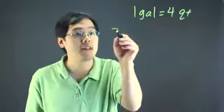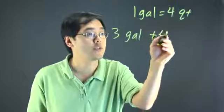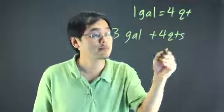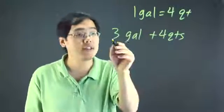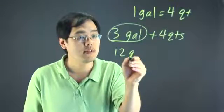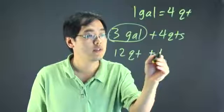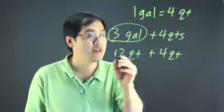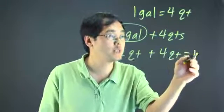So let's just say if you're adding three gallons and four quarts together, what you have to do is take the number of gallons, multiply it by four to convert it to quarts, and then 12 quarts plus 4 quarts is equal to 16 quarts.